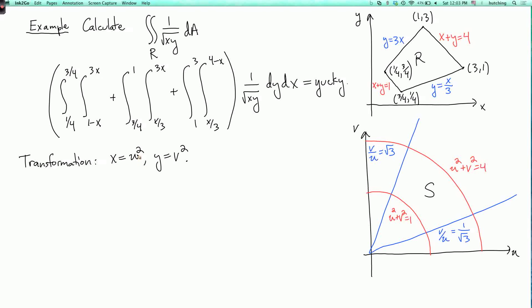But every positive number has a unique positive square root. So what we're getting is our region is sort of a polar rectangle. So when v over u equals 1 over the square root of 3, this is where theta is pi over 6. Because the tangent of pi over 6 is 1 over the square root of 3.